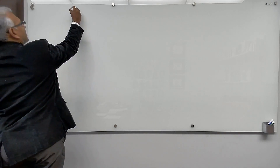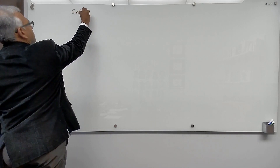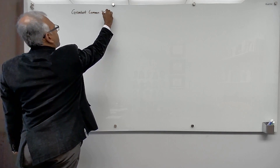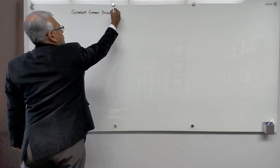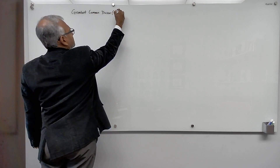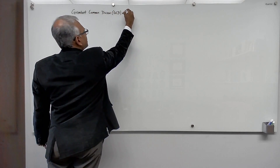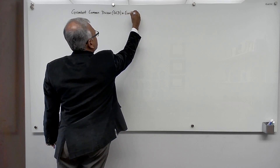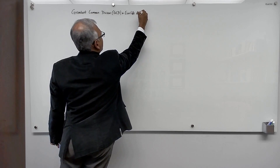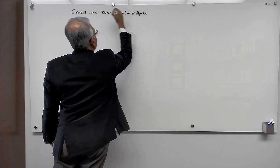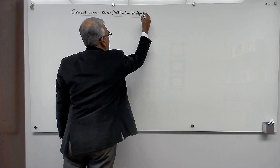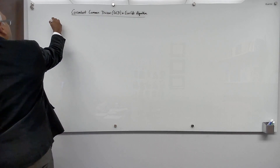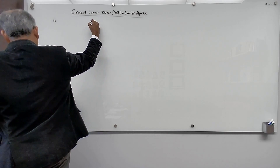So the greatest common divisor — sometimes we call this the GCD — and Euclid's algorithm. So let's take two numbers, for example 30 and 42.